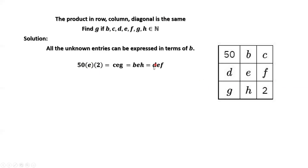What are we doing here? This is the product of the diagonal containing E. Then we think of all products containing E — row, column, diagonal. We have this result.